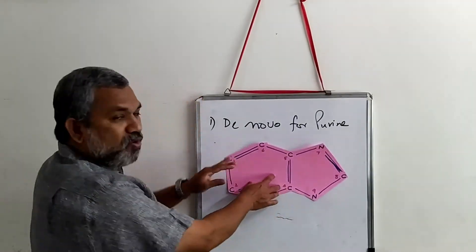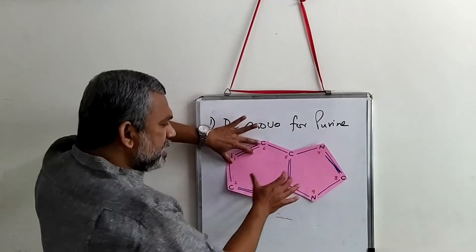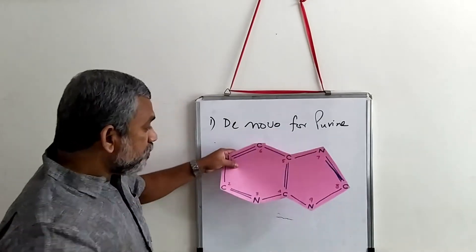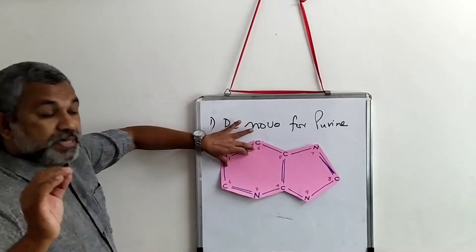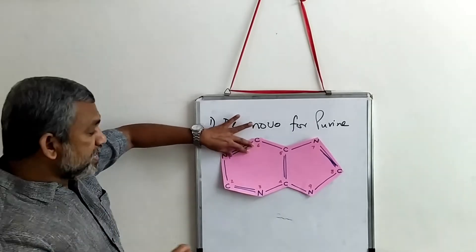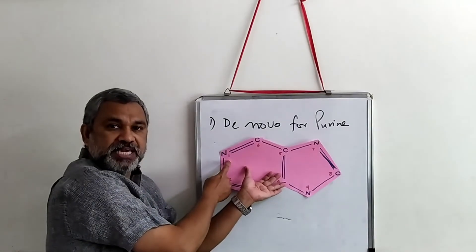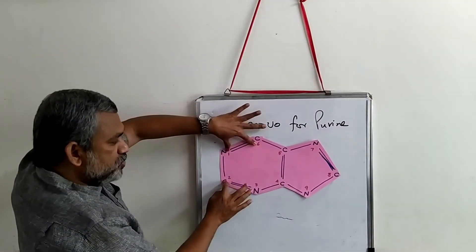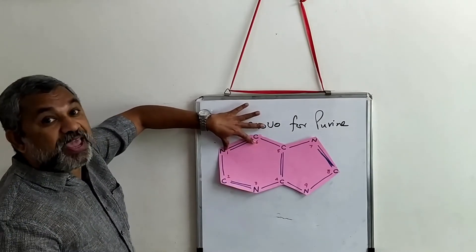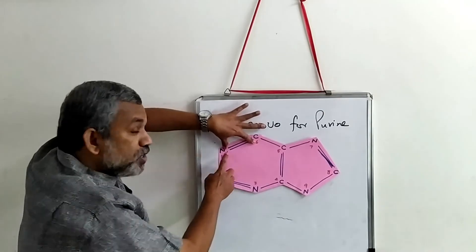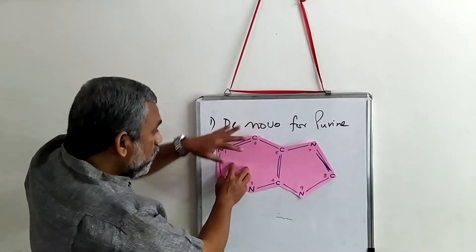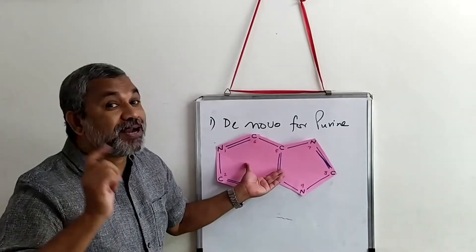Looking at the structure of a purine: it has two rings, whereas a pyrimidine has only a single ring. One of the rings is an imidazole ring. Numbering of the atoms is important — it begins at nitrogen 1 and goes anti-clockwise through carbon 2, 3, 4, 5, 6, 7, 8, 9. The numbers are written inside the ring.